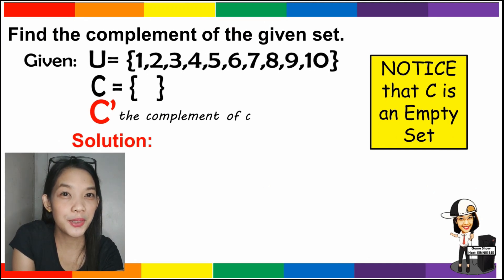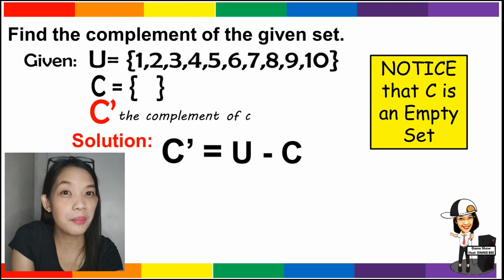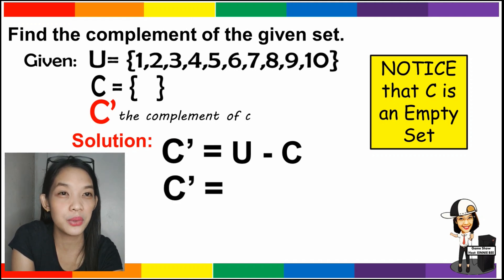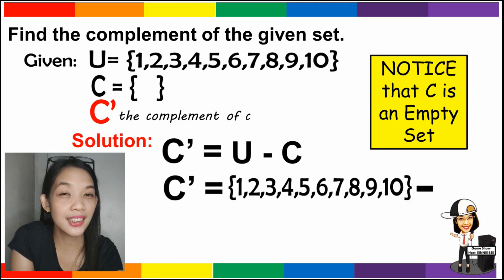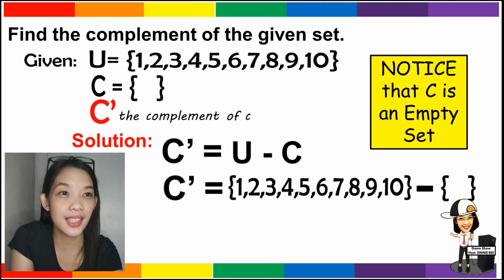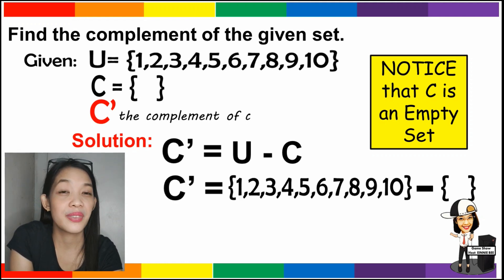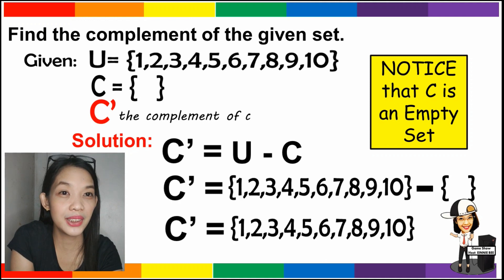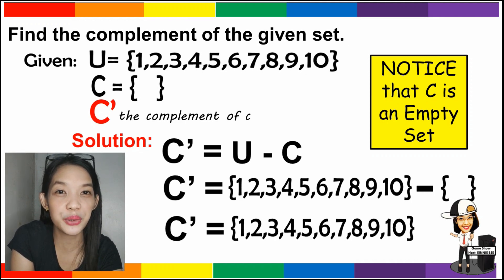And for the last one, to get the complement of C, universal set minus set C. We must list the elements of the universal set which are 1 to 10, then subtract the elements of C. But notice that set C is an empty set and therefore it has no elements. So the elements we remove are none, and the complement of C is 1, 2, 3, 4, 5, 6, 7, 8, 9, and 10, which is equivalent to our universal set.